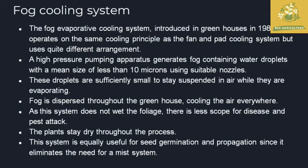The fog cooling system was introduced in 1980 and operates on the same cooling principles as the fan and pad cooling system, but with a quite different arrangement. In this design, a high-pressure pumping apparatus generates fog containing water droplets with a mean size of 10 microns using suitable nozzle materials. These droplets are sufficiently small to stay suspended in air while still operating. The fog is dispersed through the greenhouse, cooling the air everywhere. As this system does not wet the foliage, there is less scope for disease and pest attack.